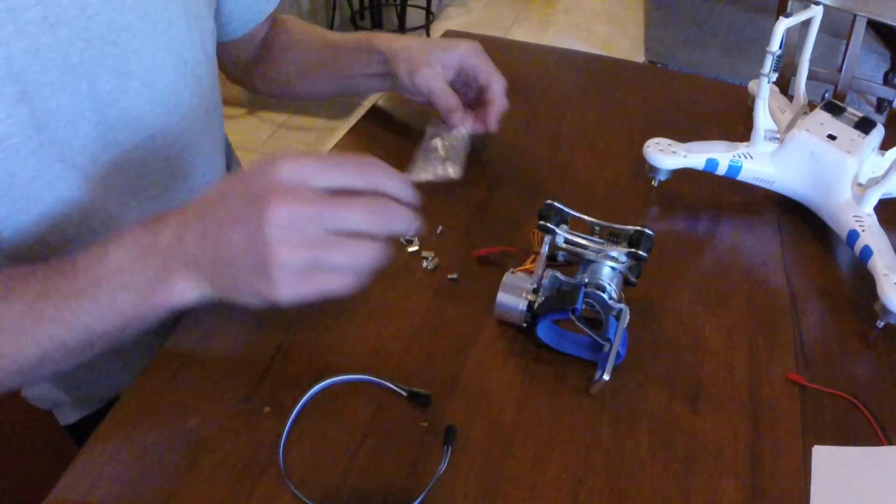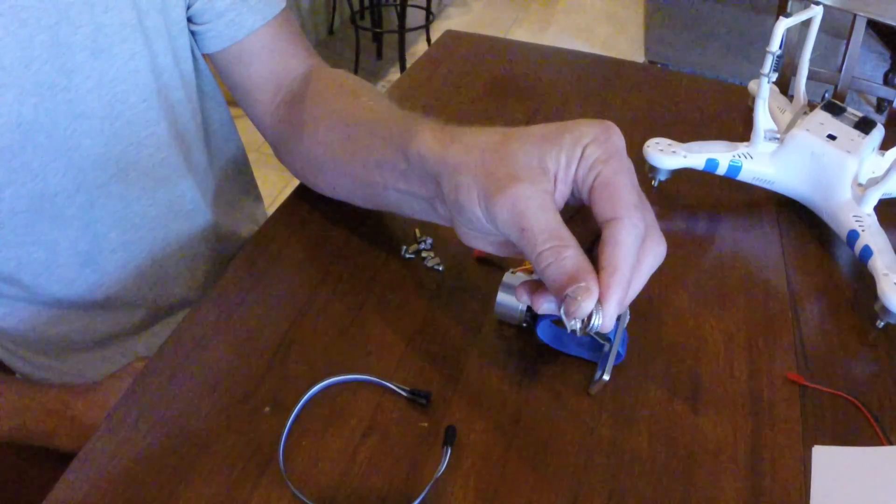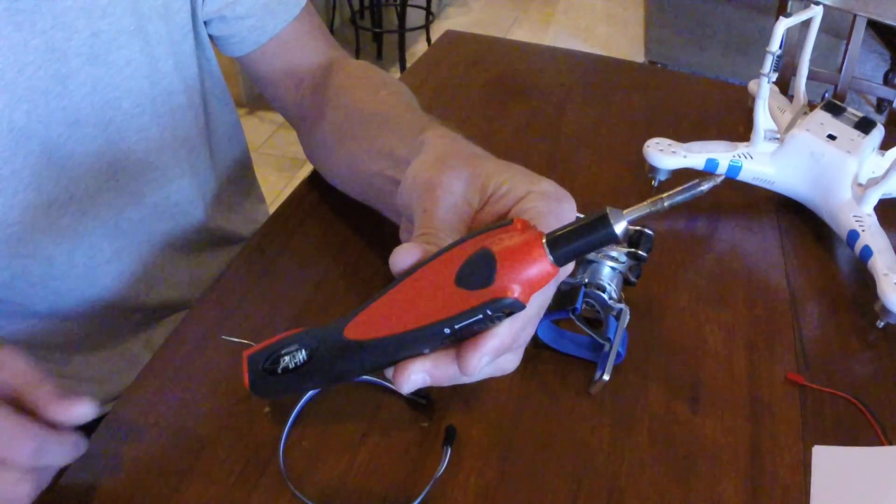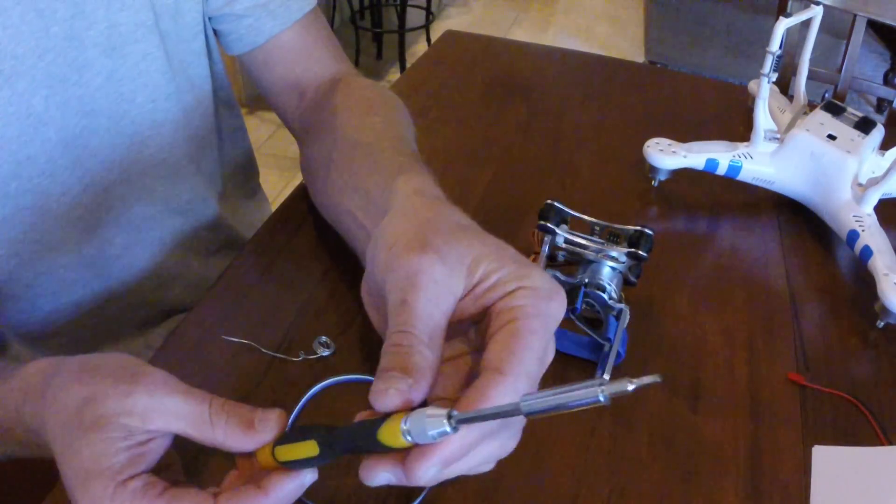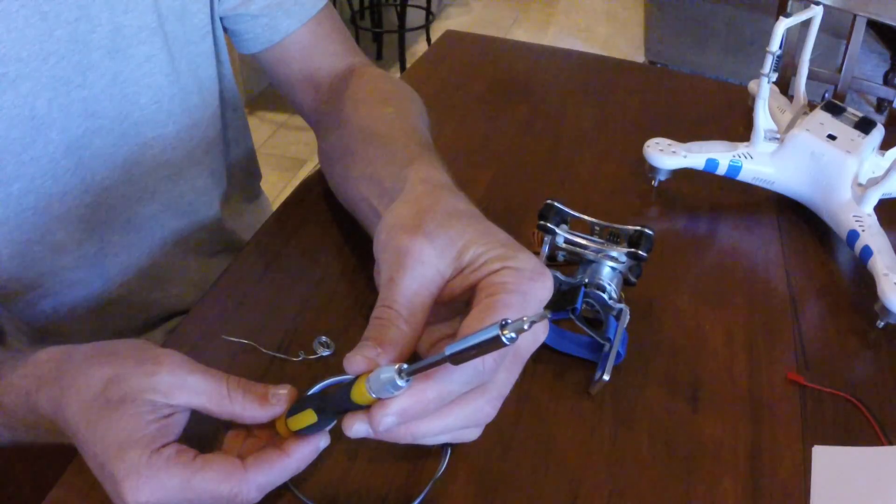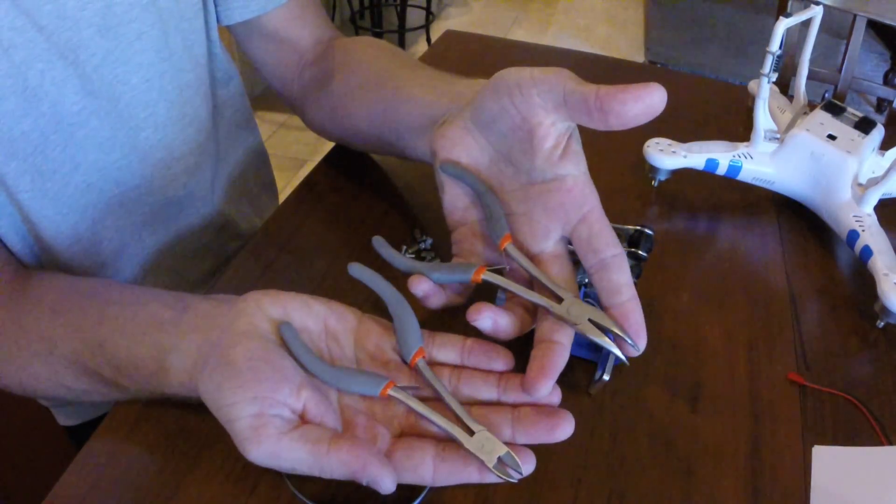Here's a list of tools for the job: mini screwdriver, solder, soldering gun, a hex screwdriver, pliers and wire cutter, and shrink tubing.